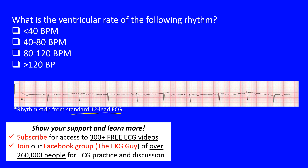We're looking for the ventricular rate. The ventricles can be identified either when they're depolarizing or repolarizing. We can use the QRS complexes, which represent ventricular depolarization, or the T waves, which represent ventricular repolarization. Both are noted because using T waves may give a slightly faster rate and could cause you to miss one.